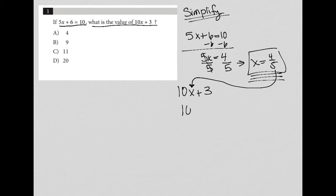So I'd have 10 times 4 fifths plus 3. 10 times 4 fifths is the same as 10 over 1 times 4 over 5, which is equal to 40 over 5, which is equal to 8.